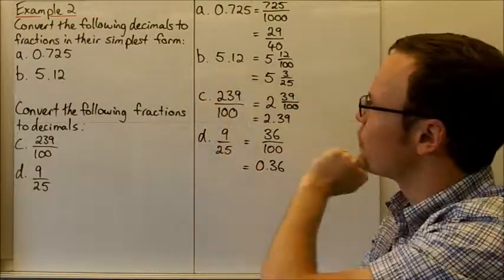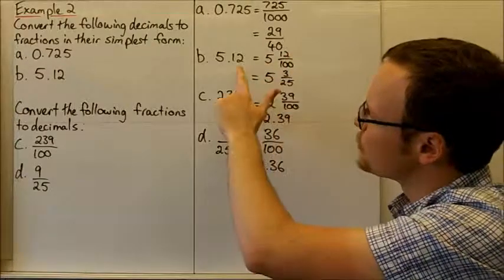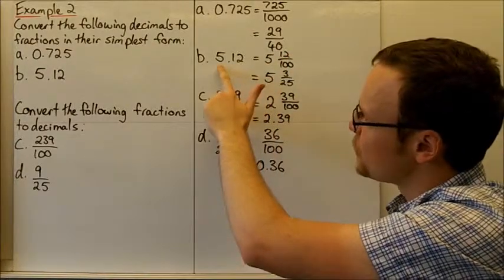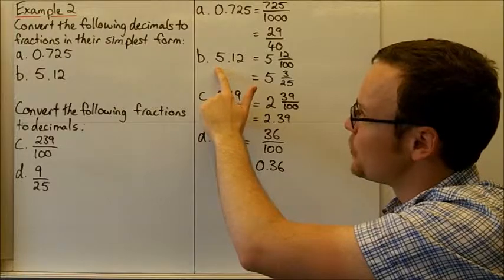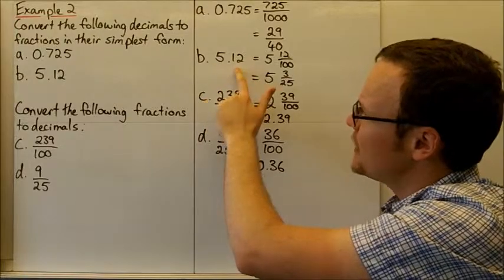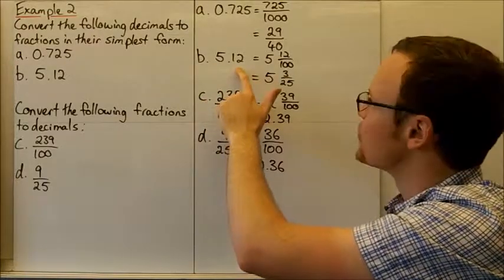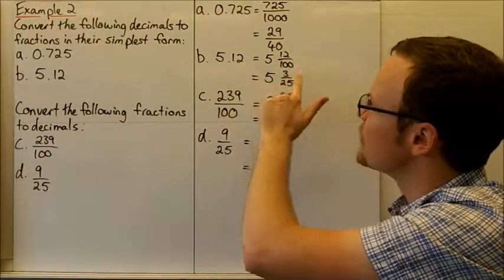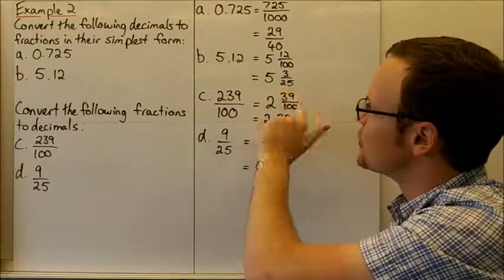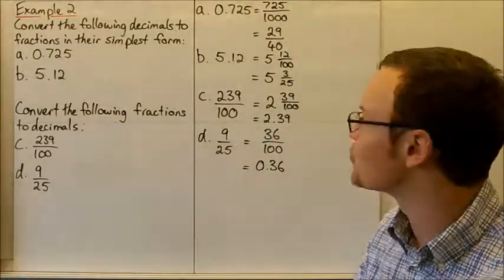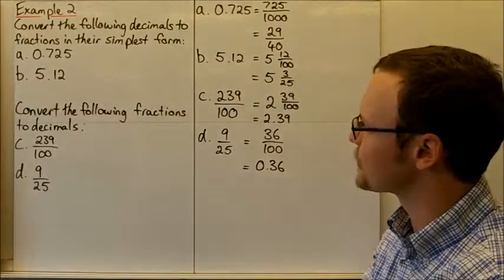For 5.12, that's the same as 5 and 12 hundredths — five whole numbers on the left-hand side of the decimal point and 12 hundredths. That can be reduced to its simplest form as 5 and 3 twenty-fifths.